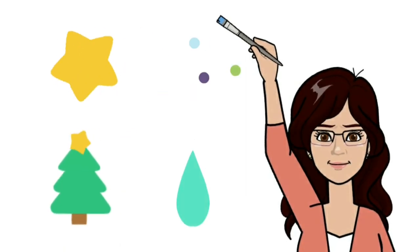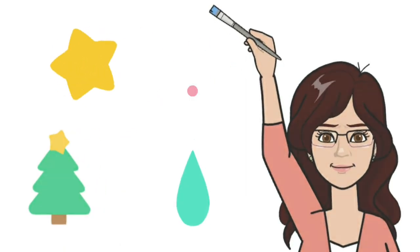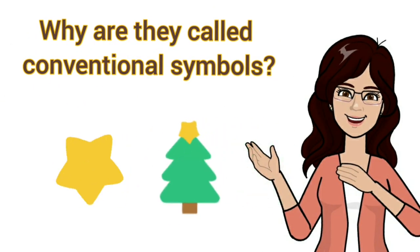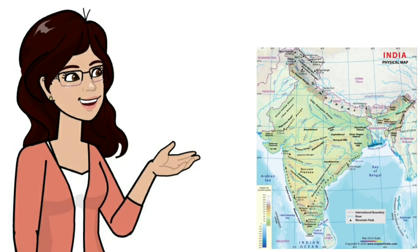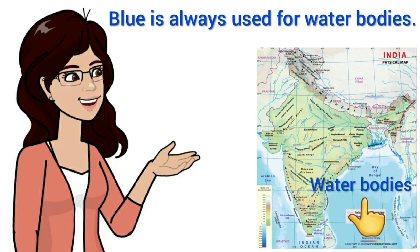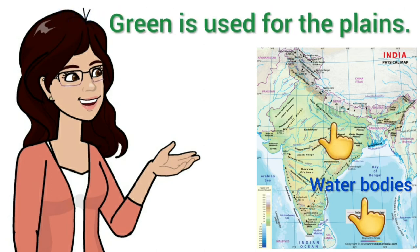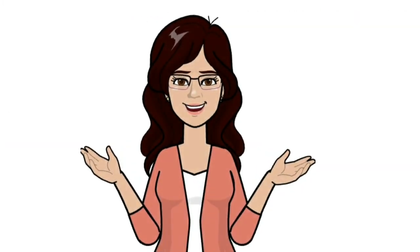These are called conventional symbols because there is an agreement among many countries of the world about the common use of these signs and symbols. For example, blue is always used to show water bodies and green is used for plains, which you can see on the map. Thus, these signs and symbols are called conventional signs and symbols.